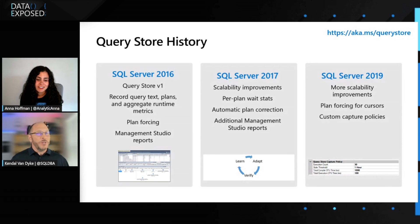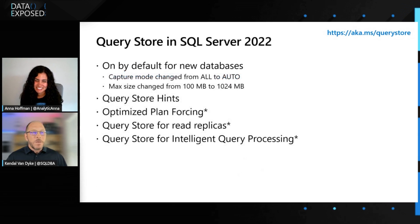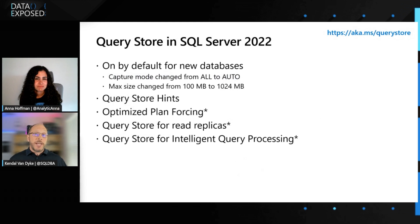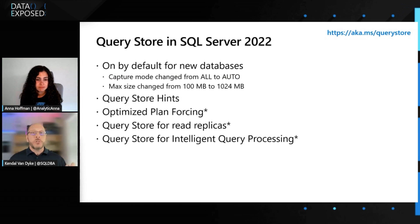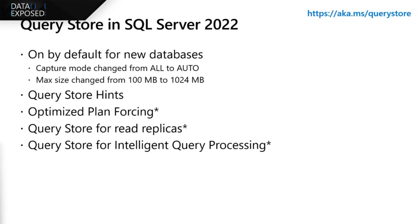That brings us to SQL Server 2022. There is a lot in SQL Server 2022. First and most importantly, Query Store is going to be on by default for all new databases. Any new database you create will have Query Store enabled with a few changes to the capture policies. First, we change the capture mode from all to auto — that introduces some thresholds so we're not capturing every single query. And second, we change the max size of Query Store from 100 megabytes to one gigabyte. Note that this does not apply to databases you've restored or upgraded — we're retaining those Query Store settings. This is only for brand new databases.